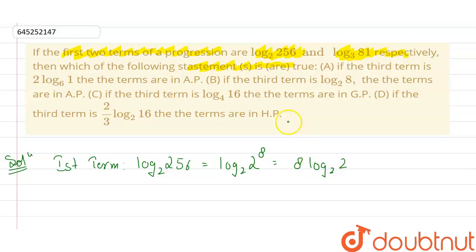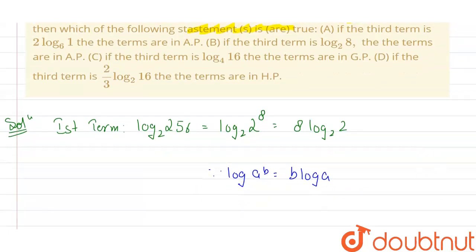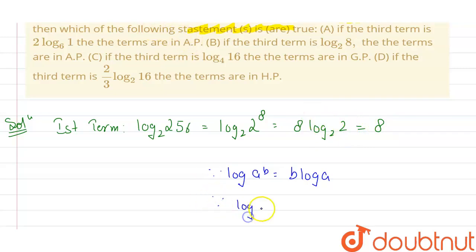The property used here is that log of a to the power b equals b·log(a). Since log base 2 of 2 equals 1, the first term simplifies to 8.